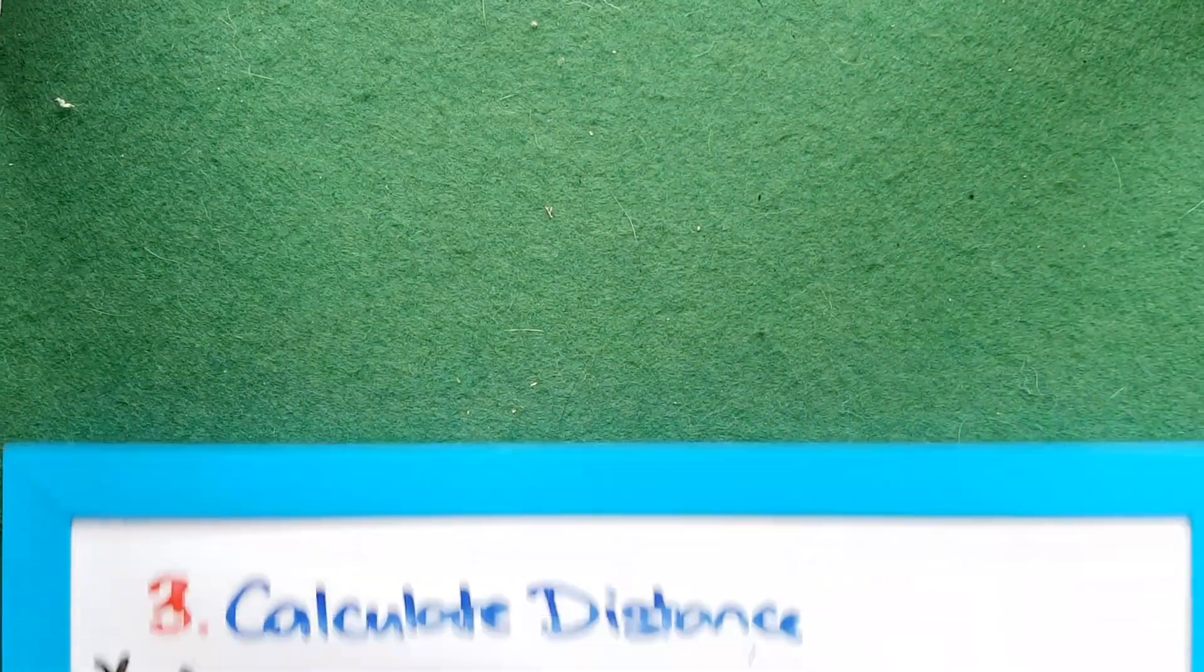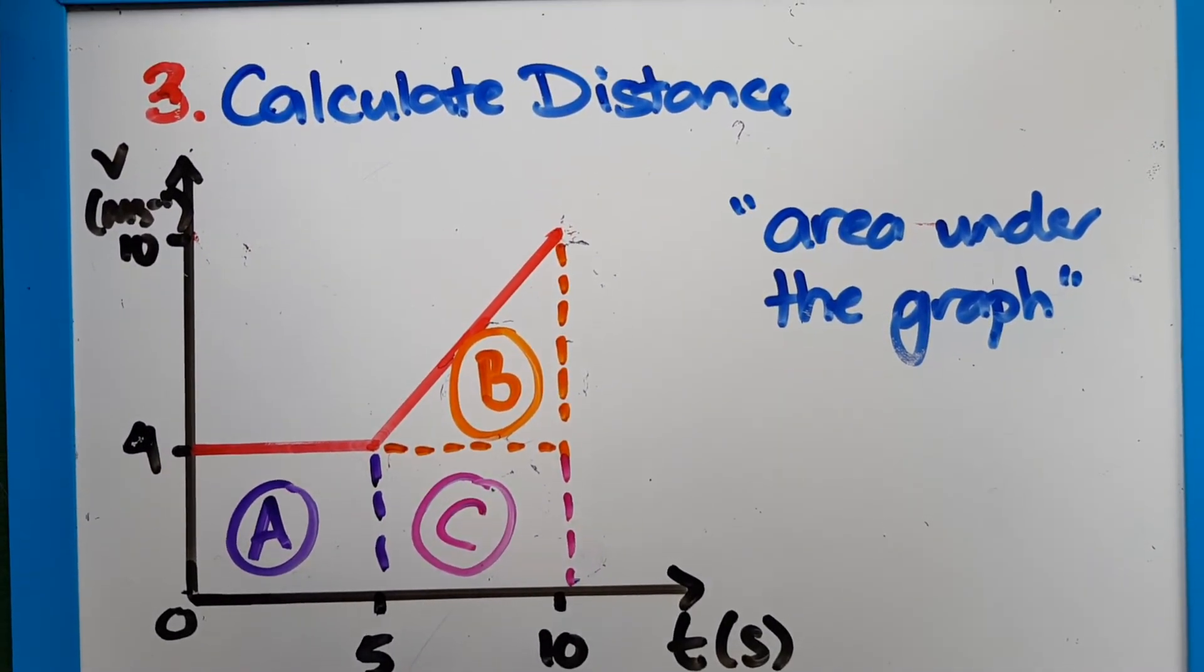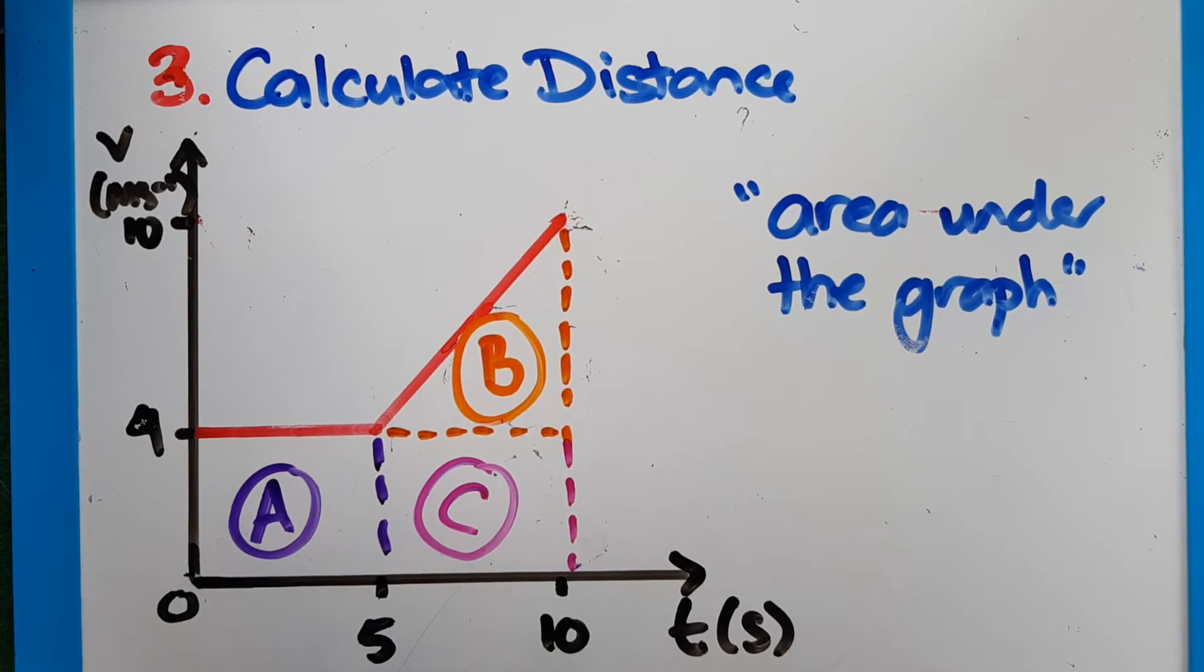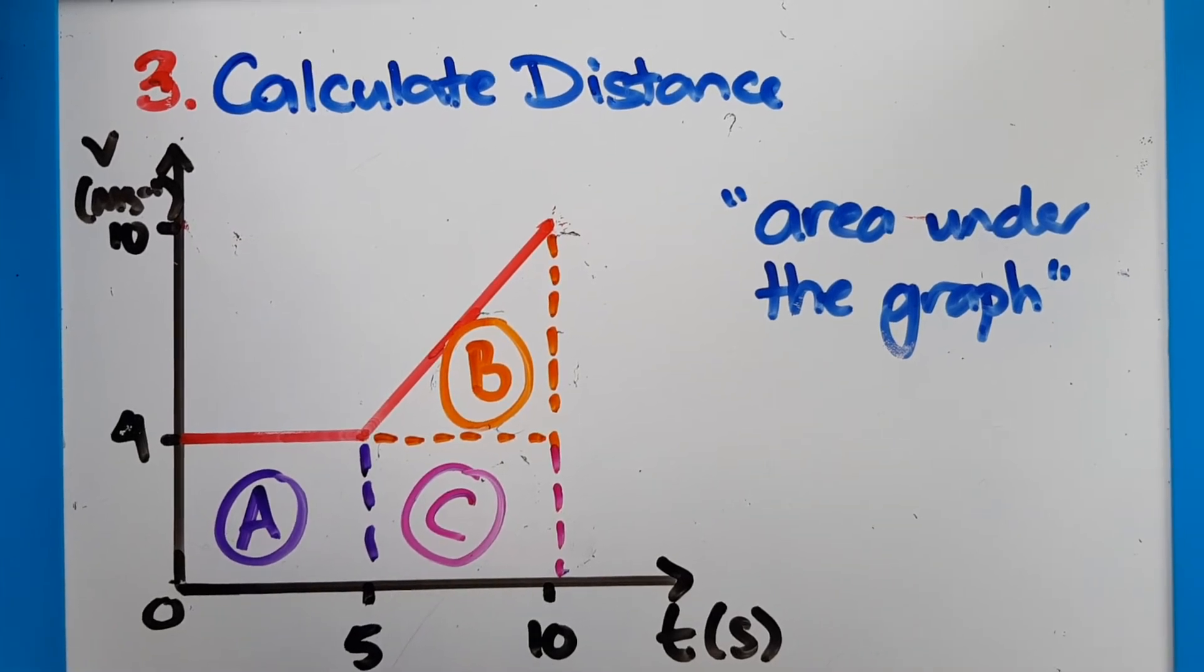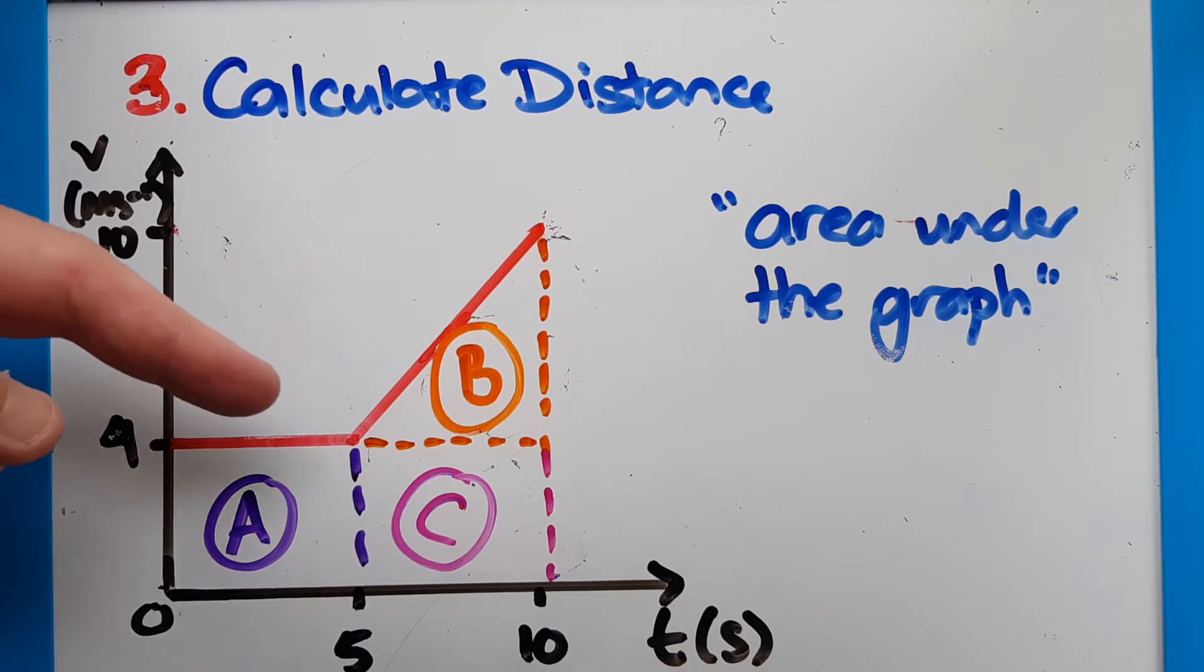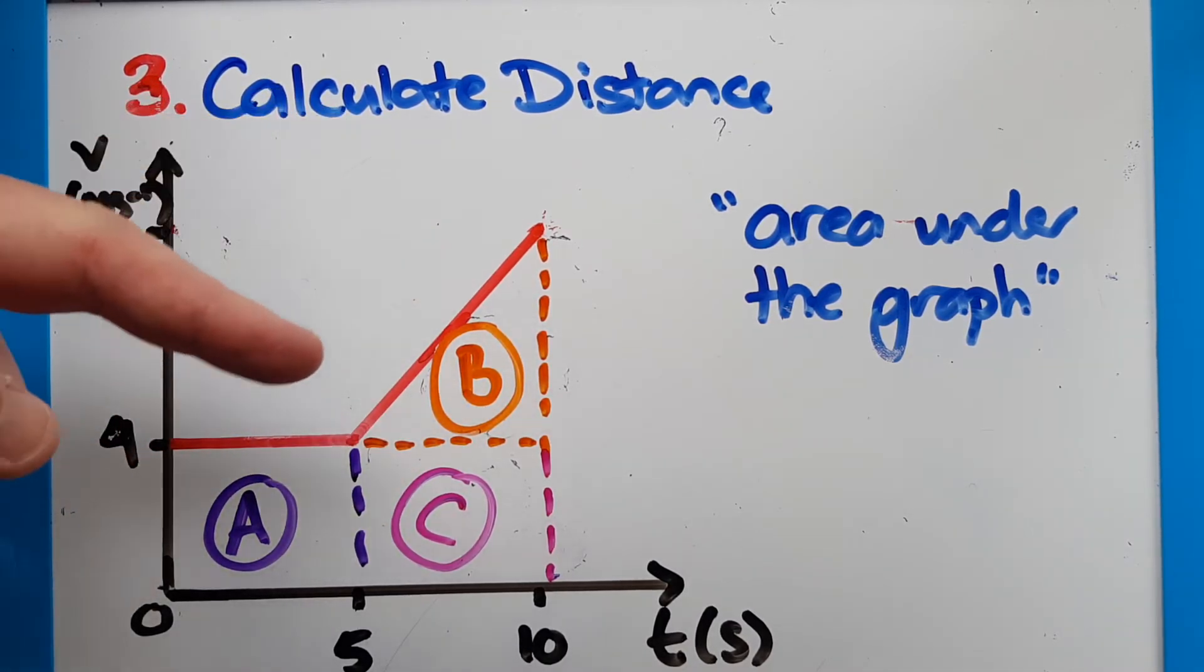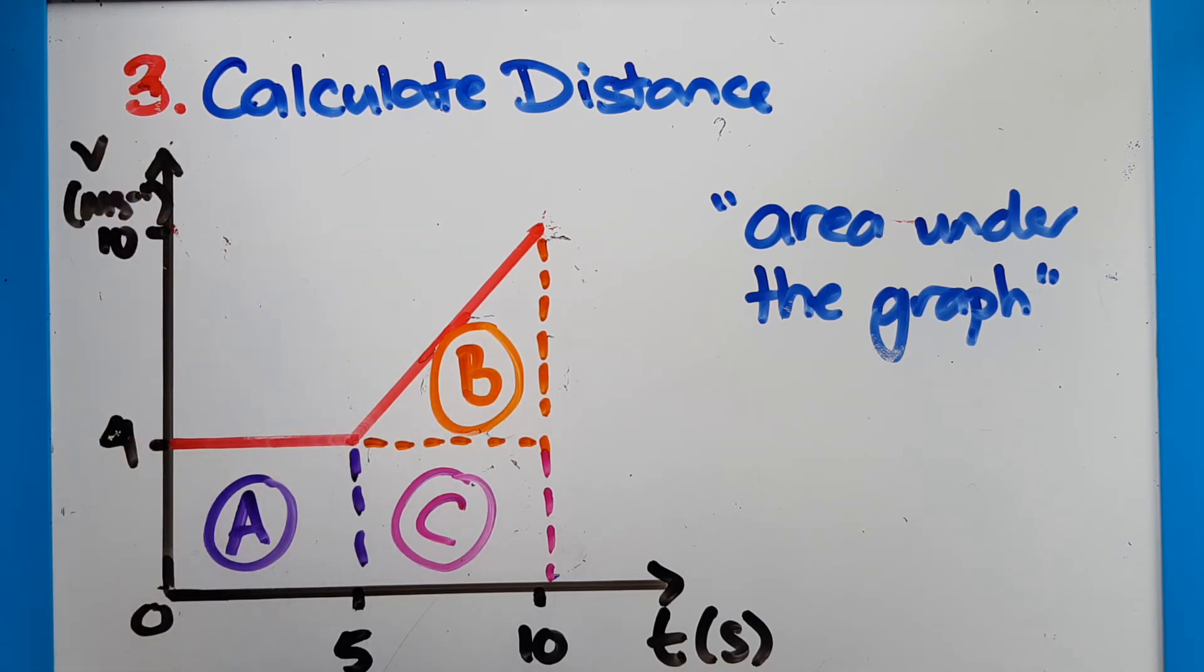So this other skill that we need is to calculate the distance traveled. So I've tried to replicate the first 10 seconds of that previous graph, where it was going a constant speed for the first five seconds at four meters per second, and then it sped up for the next five seconds until it got to 10 meters per second.